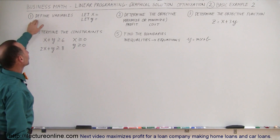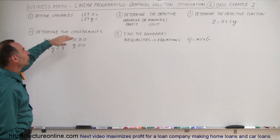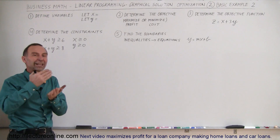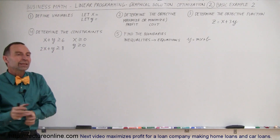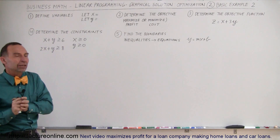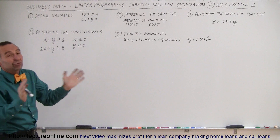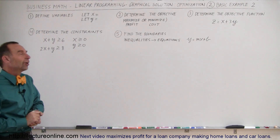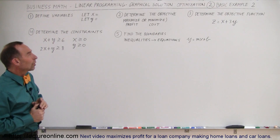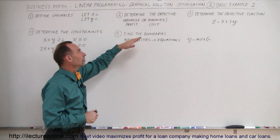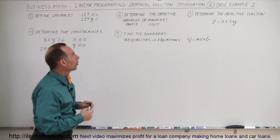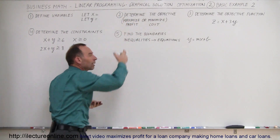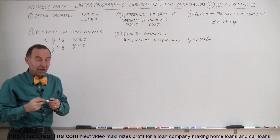The first thing you always want to do is define the variables. Usually there will be two or more variables, and you want to define them as: let x equal the quantity of something, let y equal the quantity of something. Here we don't have to worry about it because we're already given the equations. The second thing is to determine the objective — either you're maximizing or minimizing something, typically maximizing profit or minimizing cost.